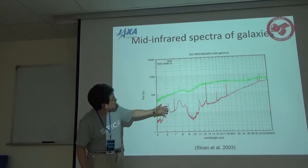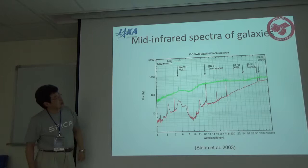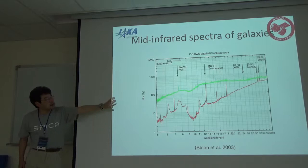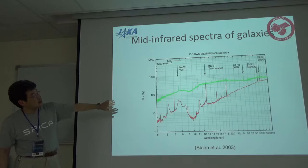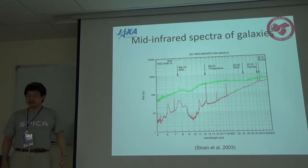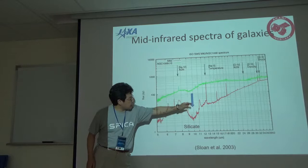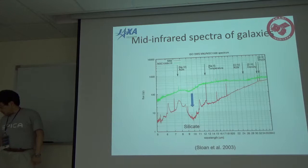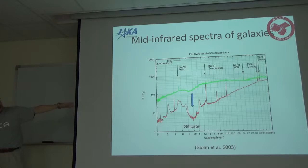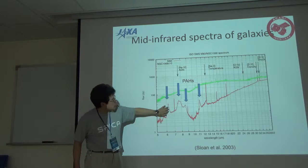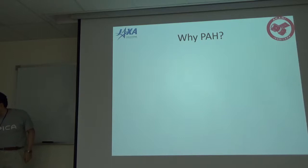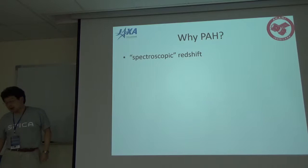This is a typical spectrum of a warm obscured AGN and star-forming galaxies. There are a lot of fine structure lines in the galaxy spectrum. We can use these lines to make a diagnostic for the physical conditions of the hidden AGN and star formation. There is also a strong silicate absorption feature. We can use these features to investigate AGN and star formation. Today I will concentrate on the PAH emissions. PAH emissions are important as an indicator of redshift features.